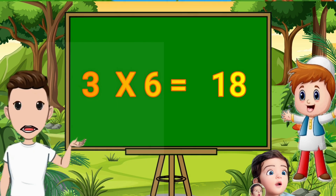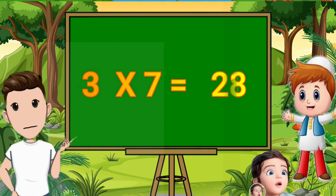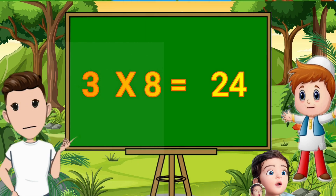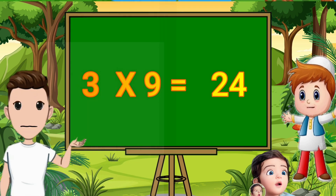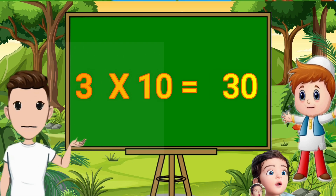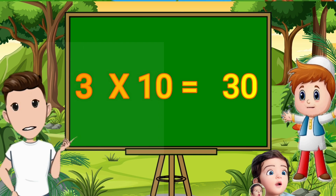Three sixes are eighteen. Three sevens are twenty-one. Three eights are twenty-four. Three nines are twenty-seven. Three tens are thirty.